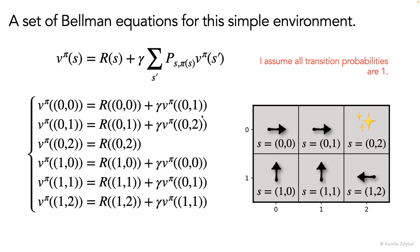So for example, the first equation: the value of being in state zero comma zero is equal to the immediate reward that the agent will receive in state zero comma zero, plus gamma times the value of being in state zero comma one, because that's the immediate next state achieved after executing the action go right. At this point, writing out the Bellman equations becomes just the bookkeeping of all the states that will be entered after each current state.